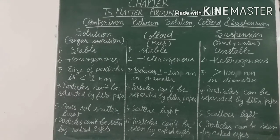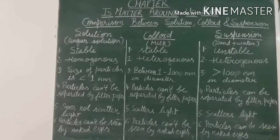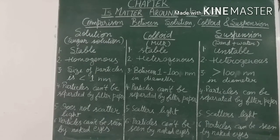The last parameter is whether we can see the particles of these three types with the naked eye. For a solution, the particles cannot be seen by the naked eye. The same goes for colloids — their particles also cannot be seen by the naked eye. But for suspension, the particles can be seen by the naked eye. If you keep the examples for solution, colloid, and suspension in mind, it is easy to understand how they differ from each other.